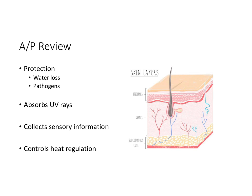As a brief recap from Anatomy and Physiology, your skin has a lot of different functions, and the most important function is protection. It protects against pathogens — it's that first line of defense — and also protects against water loss. The skin also absorbs UV rays, collects sensory information, and controls heat regulation. If there's a break in the skin integrity or a skin disorder, then some of these functions might not be working properly.